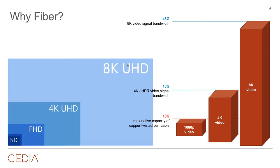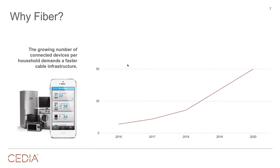HDMI 2.1 chips are now in production, so you will see 8K displays, and you'll see them fast. We saw them at InfoComm last month and we'll see them at CEDIA in a couple of weeks. 8K is real and coming fast. The punchline is you need a fiber optic infrastructure to get your signals from point A to point B. We shouldn't overlook the networking side either — it's equally important.